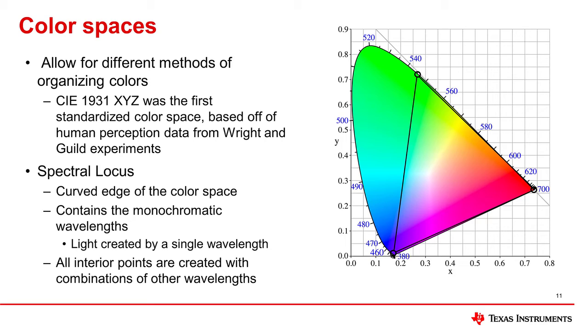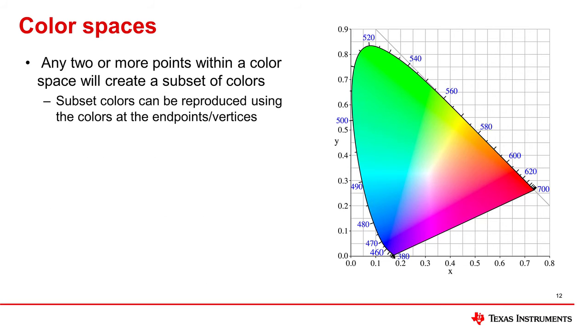However, TV monitors and other displays cannot emit a purely monochromatic color. What happens to the color space when the source wavelengths are not monochromatic? The resulting color set is much smaller and may look something like this, with the outside points of the triangle corresponding to the wavelengths emitted by the display's LEDs. This is known as a color gamut, a subset of colors that results from mixing the colors at the corners.